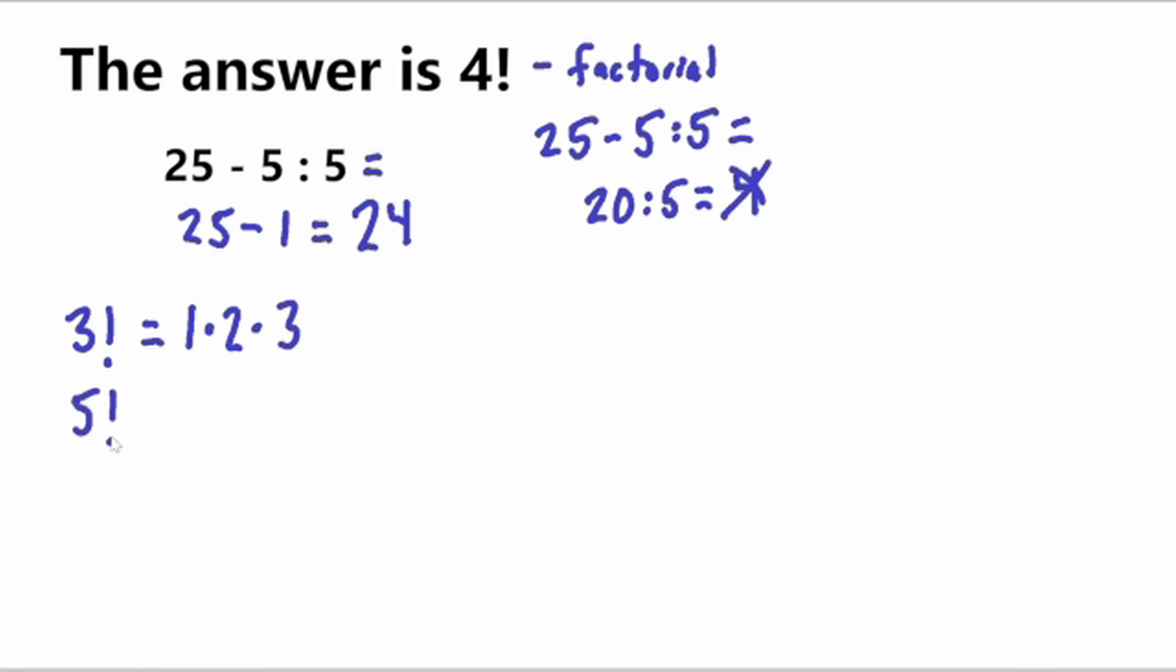So if this were, for example, 5, five factorial would be 1 times 2 times 3 times 4 times 5. So all the numbers there, from 1 to 5, all the whole numbers, and they're going to be multiplied together.